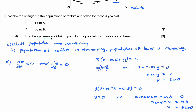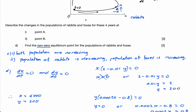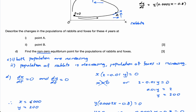Therefore, the non-zero equilibrium point is x = 4000 and y = 200. Zero would also be an equilibrium point — obviously if there were no rabbits and no foxes, nothing would happen. But if we reach 4000 rabbits and 200 foxes, the populations will stabilize: neither will grow and neither will decline.